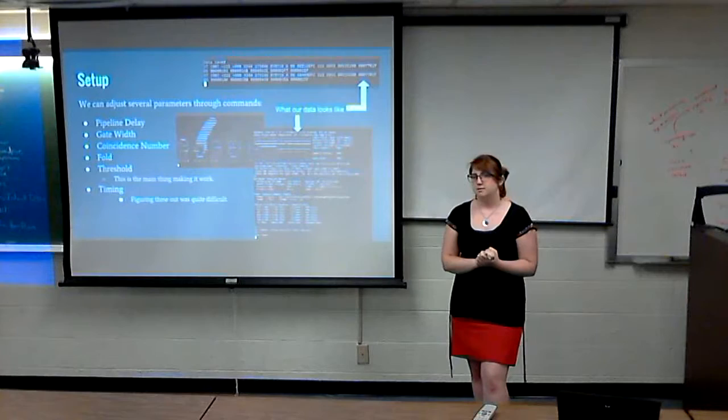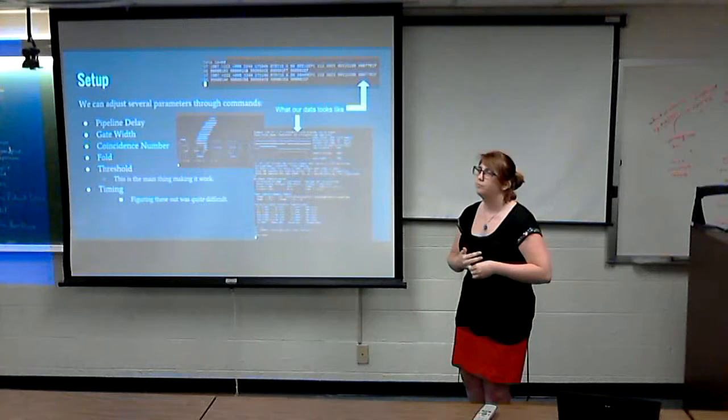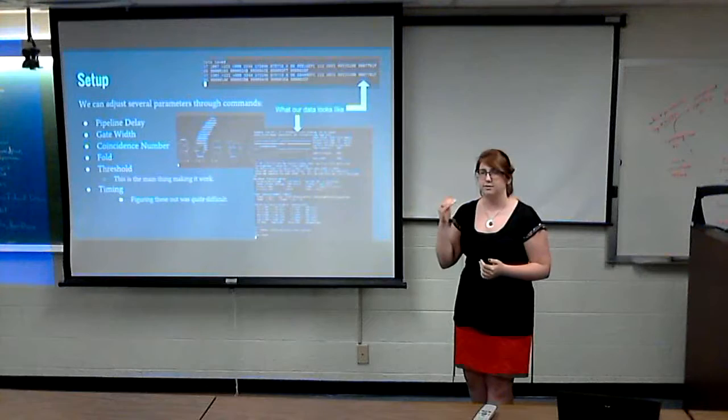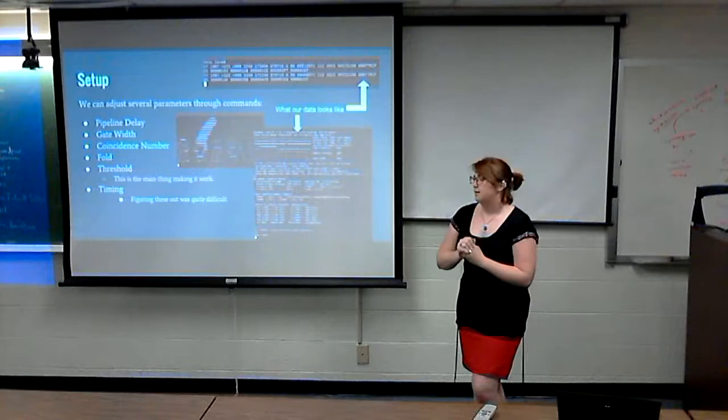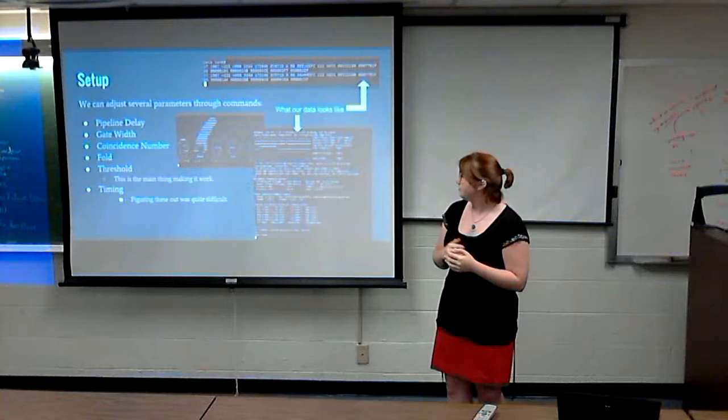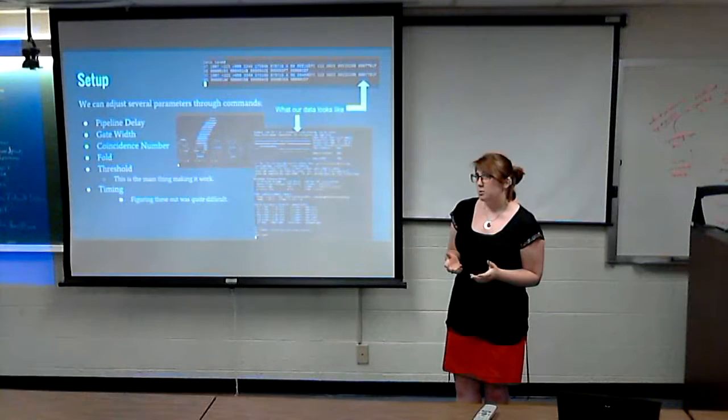Because the cosmic rays that we're detecting are high energy and most of the noise is not, we were able to raise the threshold, which means we were able to raise the level of energy necessary for it to be recorded as a coincidence. That's what blocked out a lot of the noise and got us down to what we needed to do. Figuring all these commands out was quite difficult, not because they're not recorded in the manual, but because I kind of have something against reading manuals.